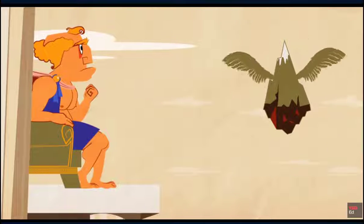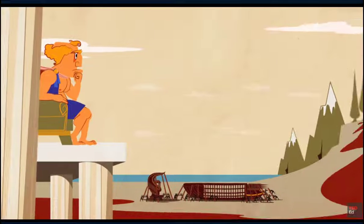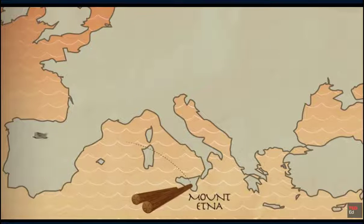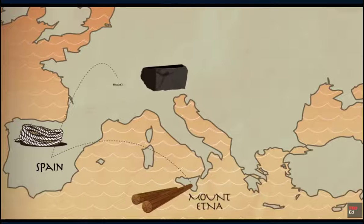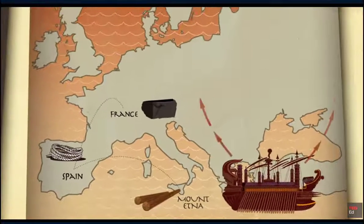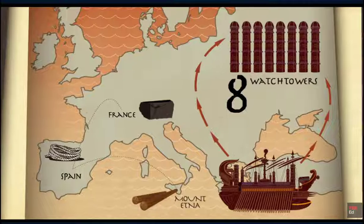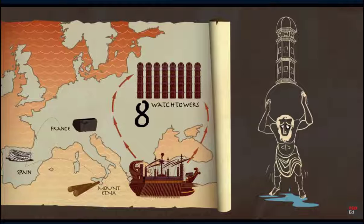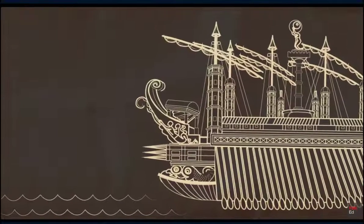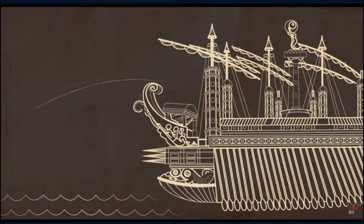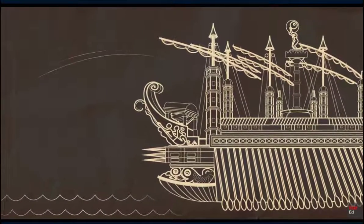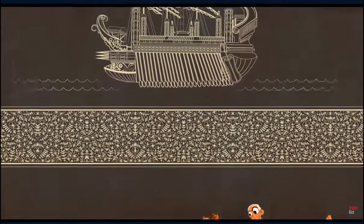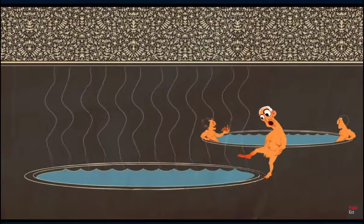Hundreds of workmen were to labor for years on the Syracusea, using beams of pine and fir from Mount Etna, ropes from hemp grown in Spain, and pitch from France. Eight watchtowers were to stand on the top deck, supported not by columns but by vast wooden images of Atlas. A massive catapult on the bow could fire 180-pound stone missiles, and passengers would enjoy a flower-lined promenade, a swimming pool, and a bathhouse with heated water.